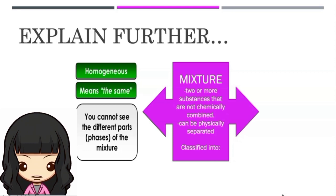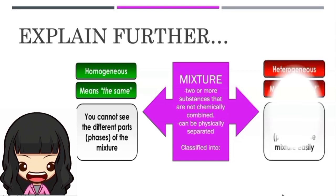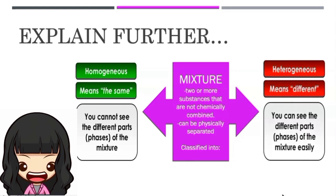Thus, in homogeneous mixtures we likely produce solutions. Aside from homogeneous mixture, we also have the heterogeneous mixture, which means different. With this kind of mixture, you can see the different parts or phases of the mixture easily. We are most likely to produce colloids and suspensions in this kind of mixture.